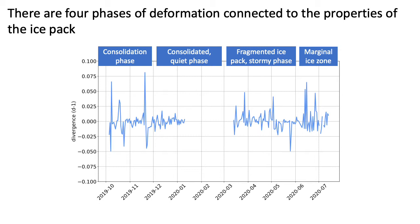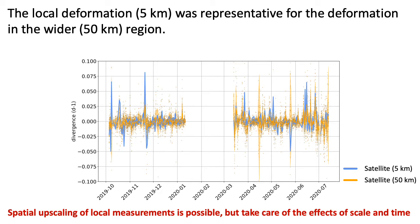In March the ice pack broke up due to several storms and the newly formed deformation zones did not consolidate properly. In the last period, the ice was more mobile with a clear dominance of divergence — so the ice was moving apart — while the MOSAiC floe approached the ice edge. We can now add in orange the deformation time series from the surroundings, where all orange dots represent deformation in a 50 km circle. Statistics show that the deformation time series of the MOSAiC floe was representative for the deformation of the wider region; on average, the MOSAiC floe experienced as many exceptionally strong events as the floes in the surroundings.